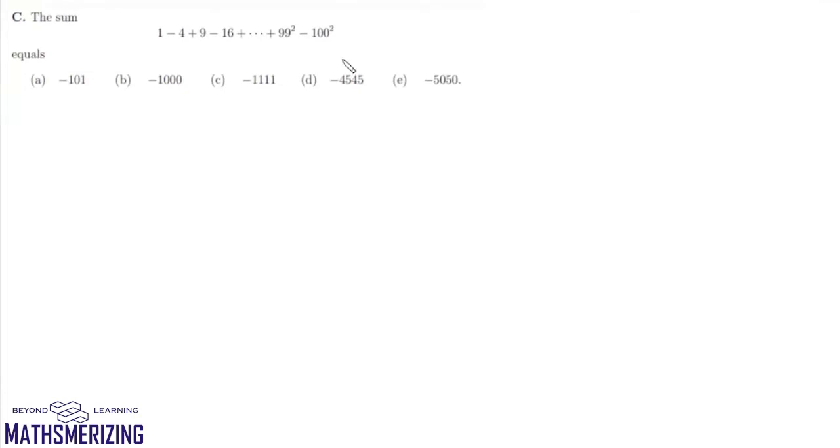Now question number 1c is we need to find the sum of the series. We can write the series as 1 square minus 2 square plus 3 square minus 4 square, and this series goes all the way up to 100 square.